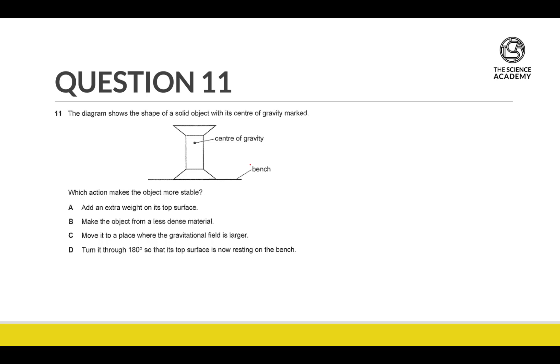So for question 11, we are told that we have a solid object with the center of gravity marked. Which action makes the object more stable? To make it more stable, we need to do two things: widen the base and lower the CG.